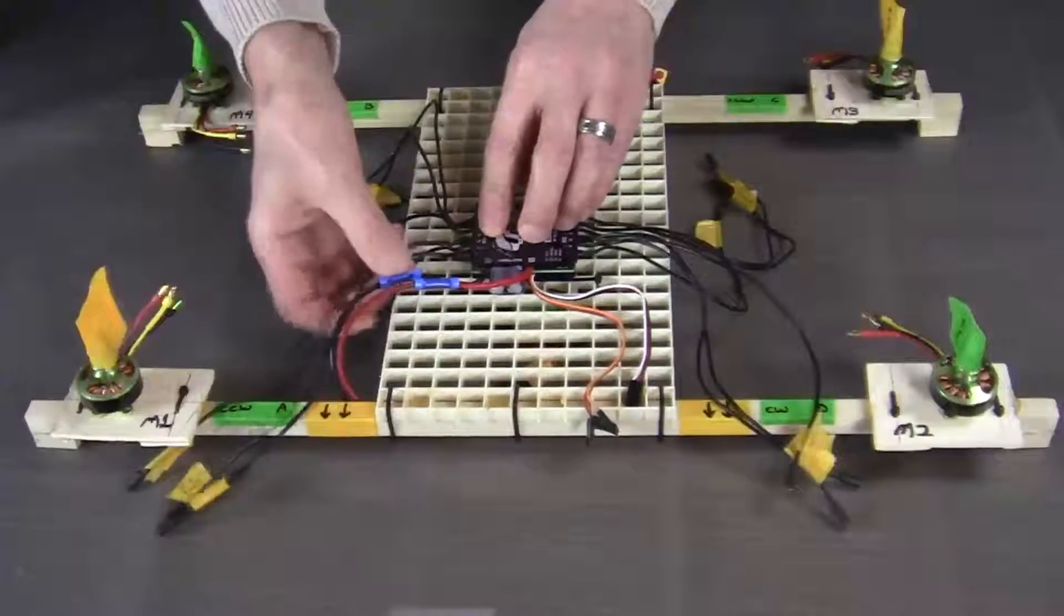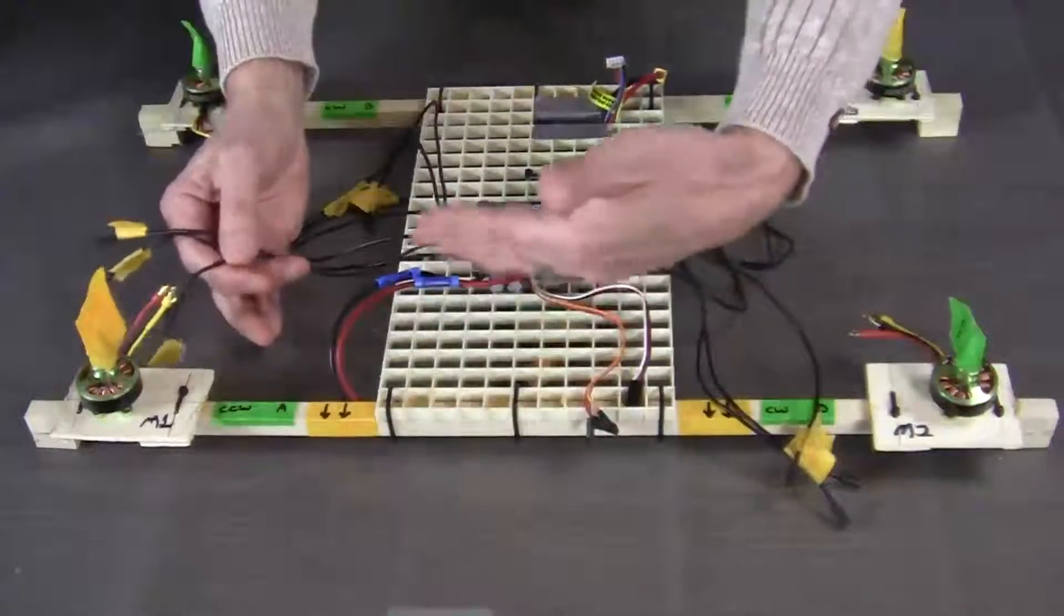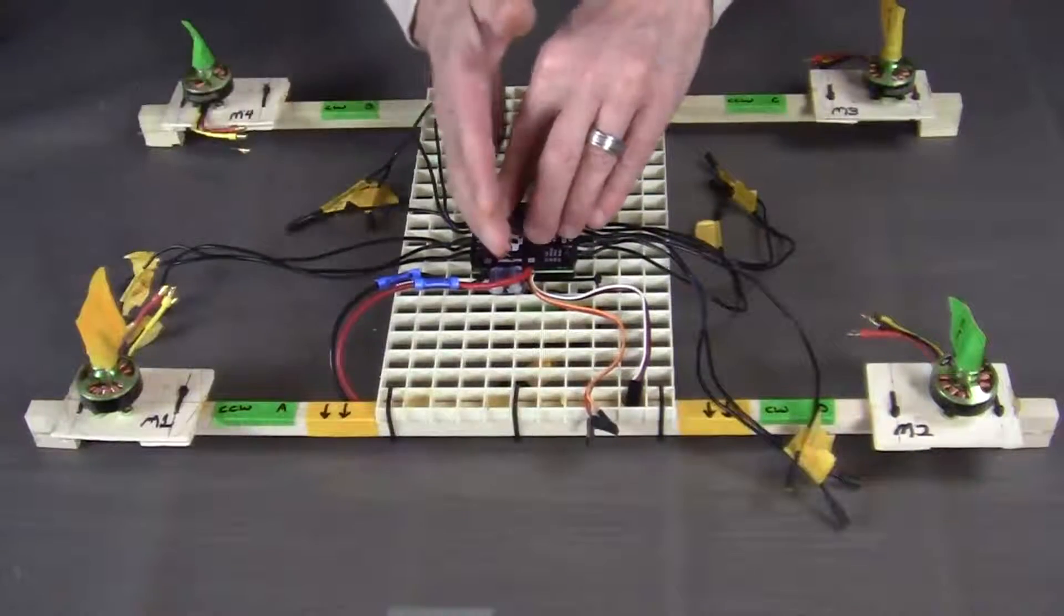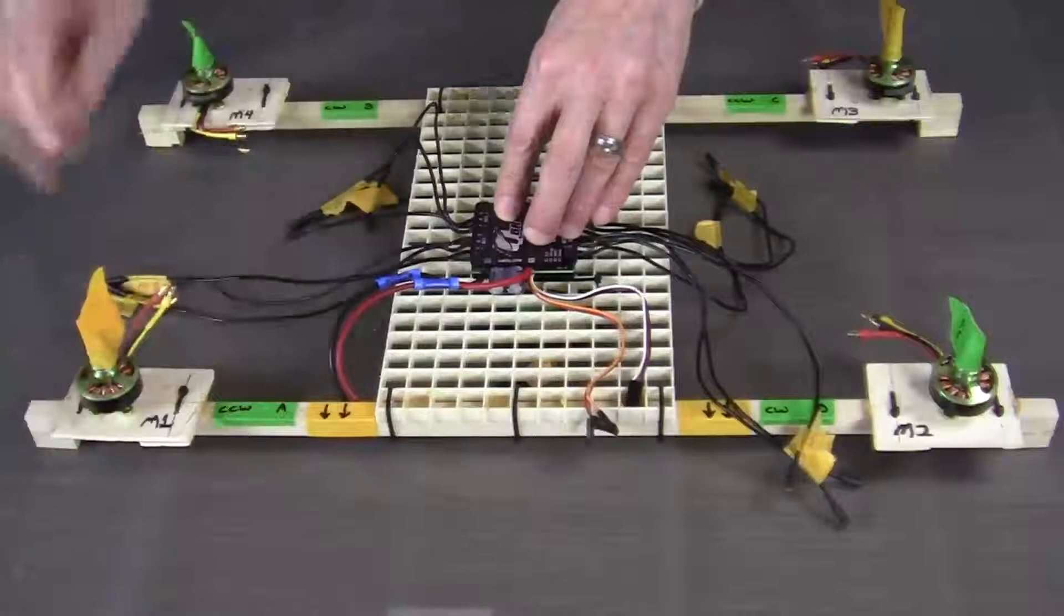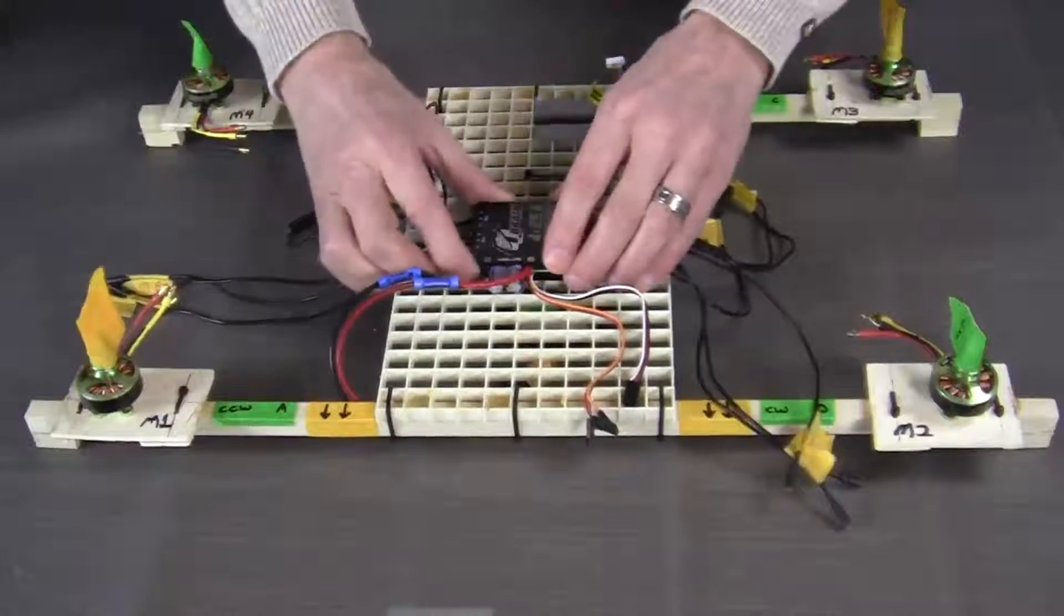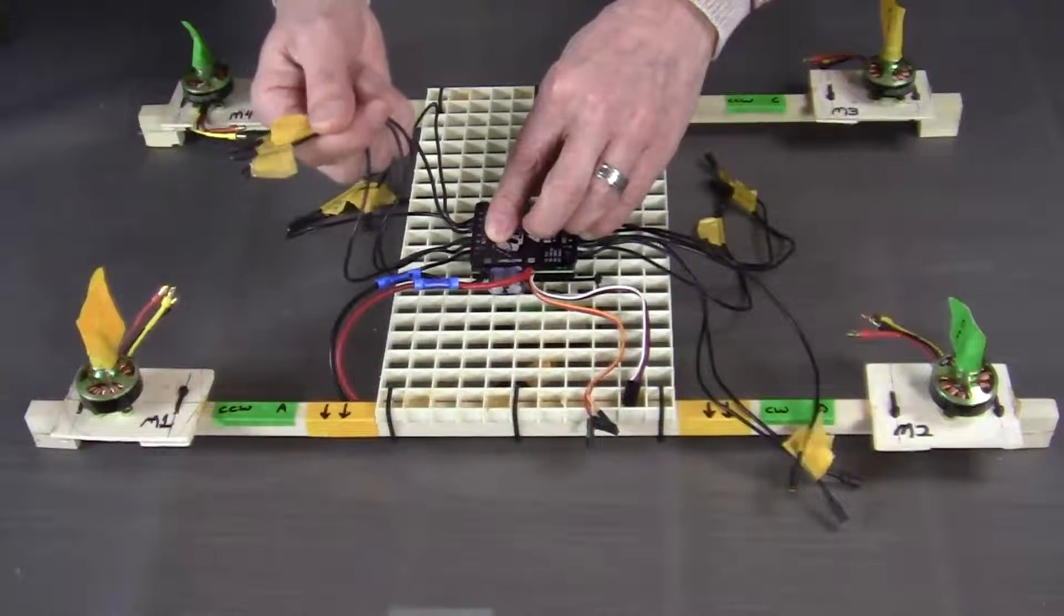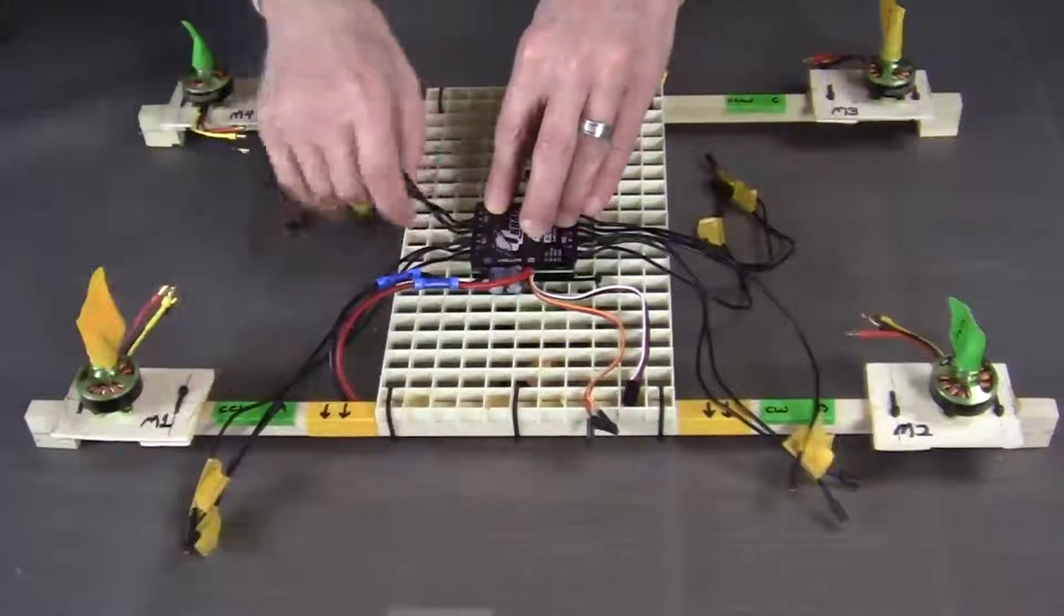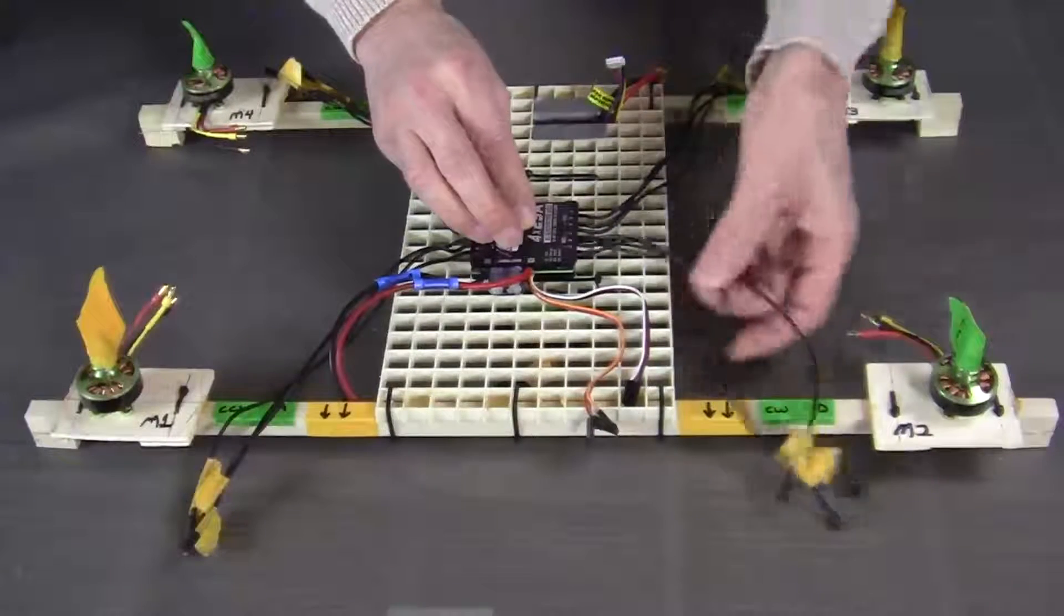Now our M1 motor, if you're at the front of the quadcopter looking at the front facing you, our M1 and our M4 we want to be on your left hand side. That'll make this motor and this motor M1 and M4. So on the QBrain we have the first three sets of wires is M1 and then M4, M3 and M2.